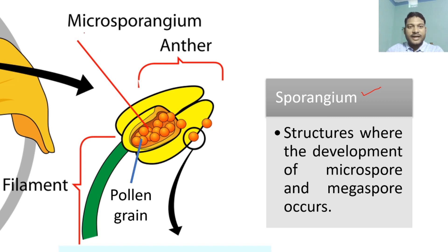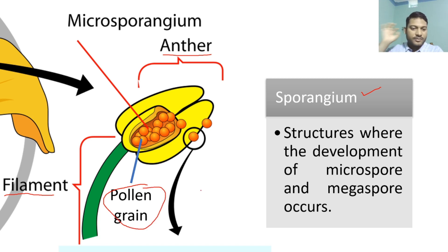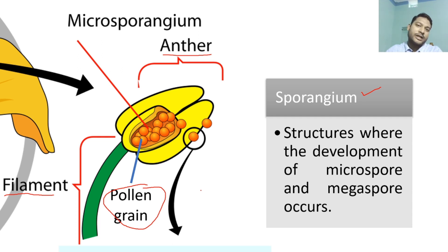The male structure contains the Microsporangium and it consists of the anther and the filament. This Microsporangium, or the anther, contains the pollen grain. Remember, pollen grain is not the male gamete. Many students make this mistake, but the male gamete is going to be present inside the pollen grain. We will talk about that.